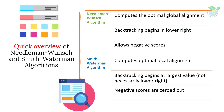Dynamic programming for sequence alignments begins by defining a matrix or table to compute the scores. The Needleman-Wunsch algorithm computes the optimal global alignment, where it permits negative scoring, and backtracking begins in the lower right. For the Smith-Waterman algorithm, backtracking begins at the largest value, not necessarily the lower right.